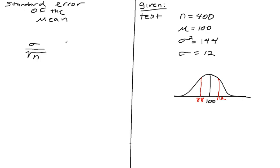So in this case, it is 12 over the square root of 400, which is 12 over 20, and that gives us 0.6. So our standard error of the mean, which I'll write up here for all our future problems, is 0.6.